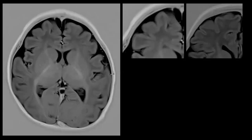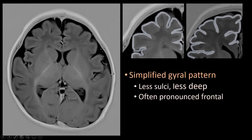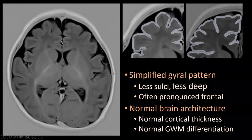How would you describe the difference? Looking at T1-weighted inversion recovery images in magnification and comparing the gyri and sulci, we see fewer sulci in the child with microcephaly, and they also appear a bit less deep. So we see what is called a simplified gyral pattern — fewer sulci compared to a normal child. This is most often most pronounced in the frontal lobes. Apart from that, the cortex is perfectly normal, with normal cortical thickness and normal gray-white matter distinction.